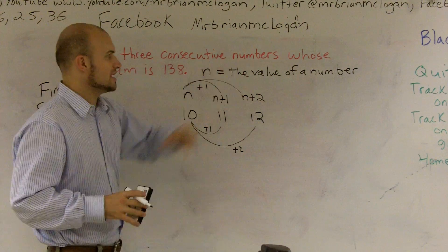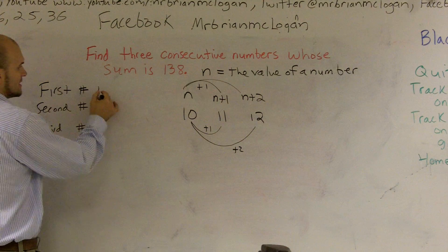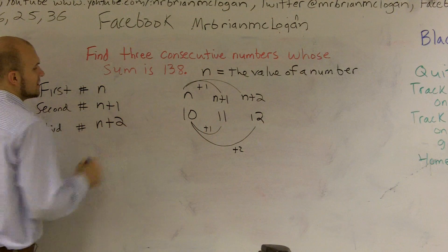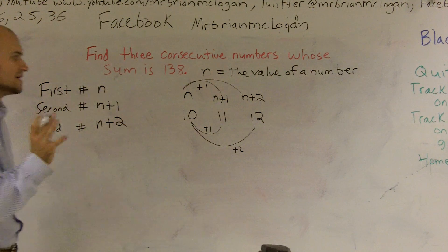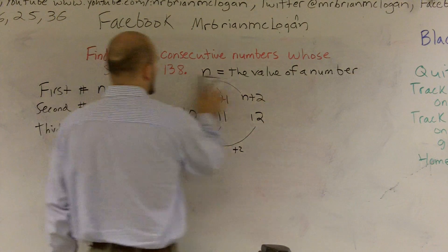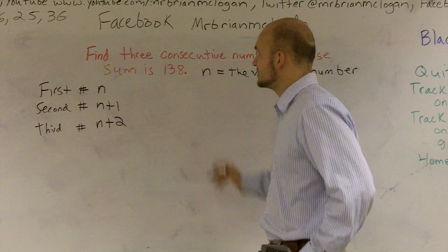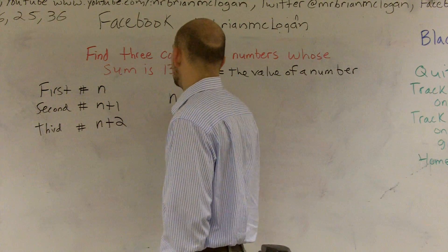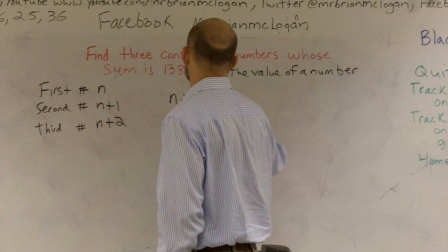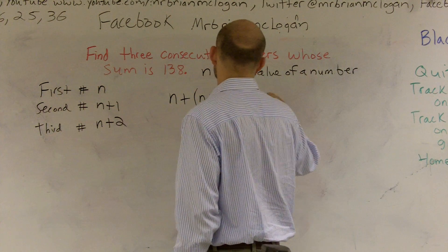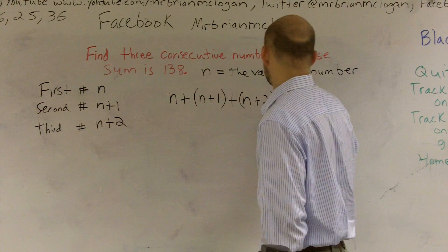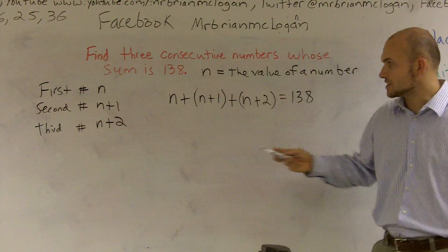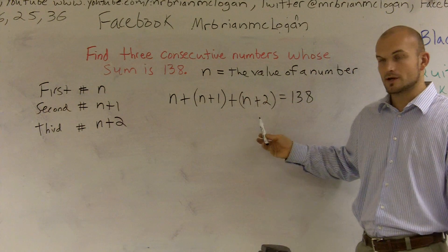Since n is the value of a number, my first number is n, my second number is n plus 1, and my third number is n plus 2. Now I can write an equation, because the sum of all these numbers is 138. So I'll write n plus (n plus 1) plus (n plus 2) equals 138. I wrote these in parentheses so you can see: that's my first number, second number, and third number.